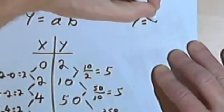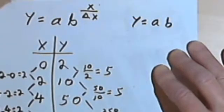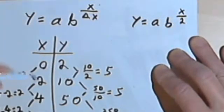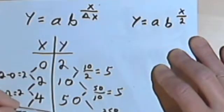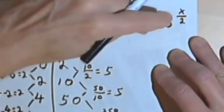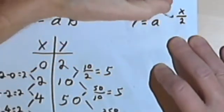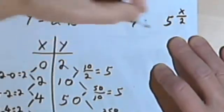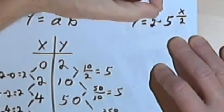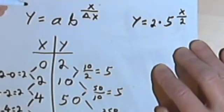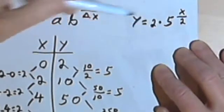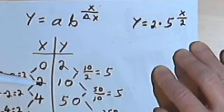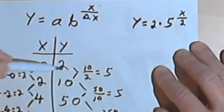So I've got y equals ab to the x over 2. Now, in my output column I didn't change any of the numbers. So my common ratio is still 5. So I can put a 5 instead of the b. And I should be able to keep the a, which I found out was a 2. All I did was I went from the previous equation that I had and I added this delta x. I changed what happens to x as we go from one set of numbers to another. So let's try that out.